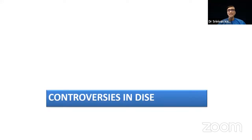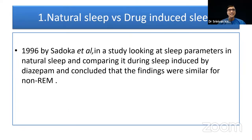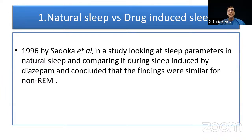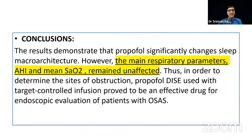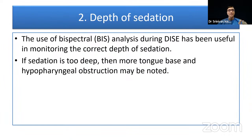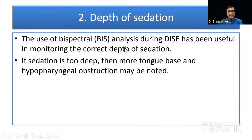There are controversies around DISE. First, is drug-induced sleep the same as natural sleep? Data shows AHI values are equivalent, so this controversy can be laid to rest. Second, depth of sedation: using BIS scoring ensures you are not over-scoring. A video example shows partial obstruction at BIS 80 but complete upper airway collapse at BIS 70 — demonstrating how critical BIS monitoring is to accurate scoring.